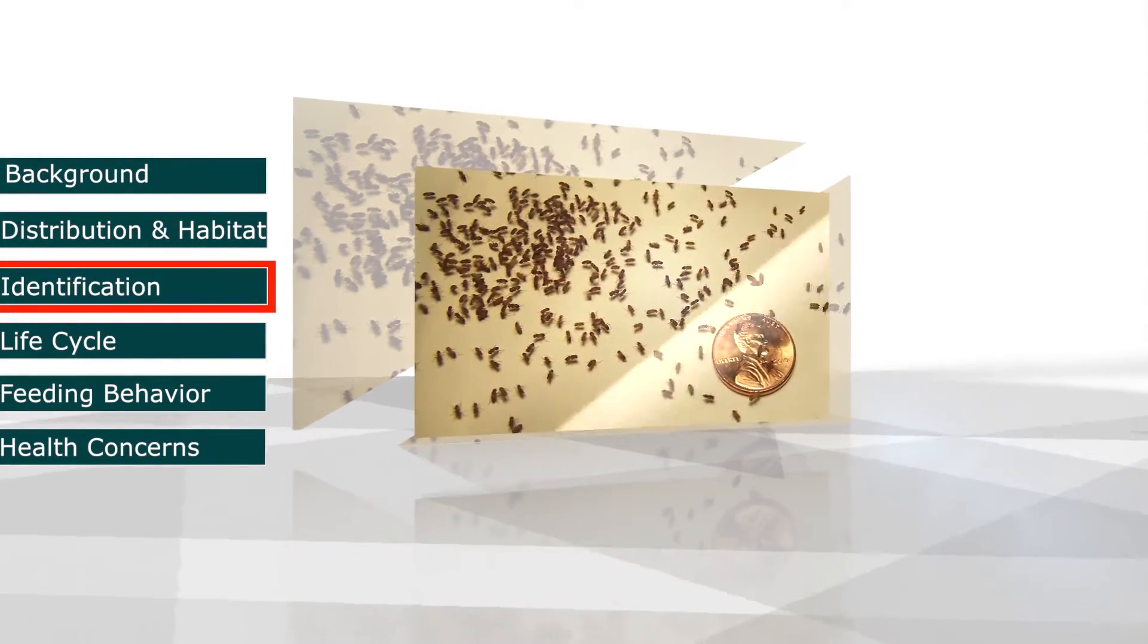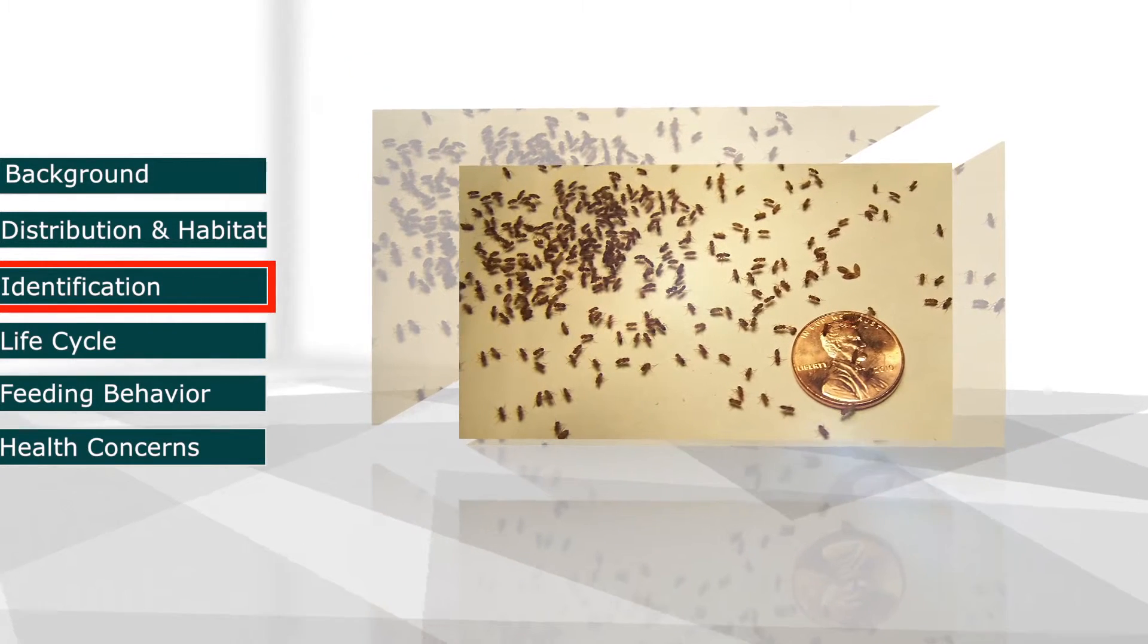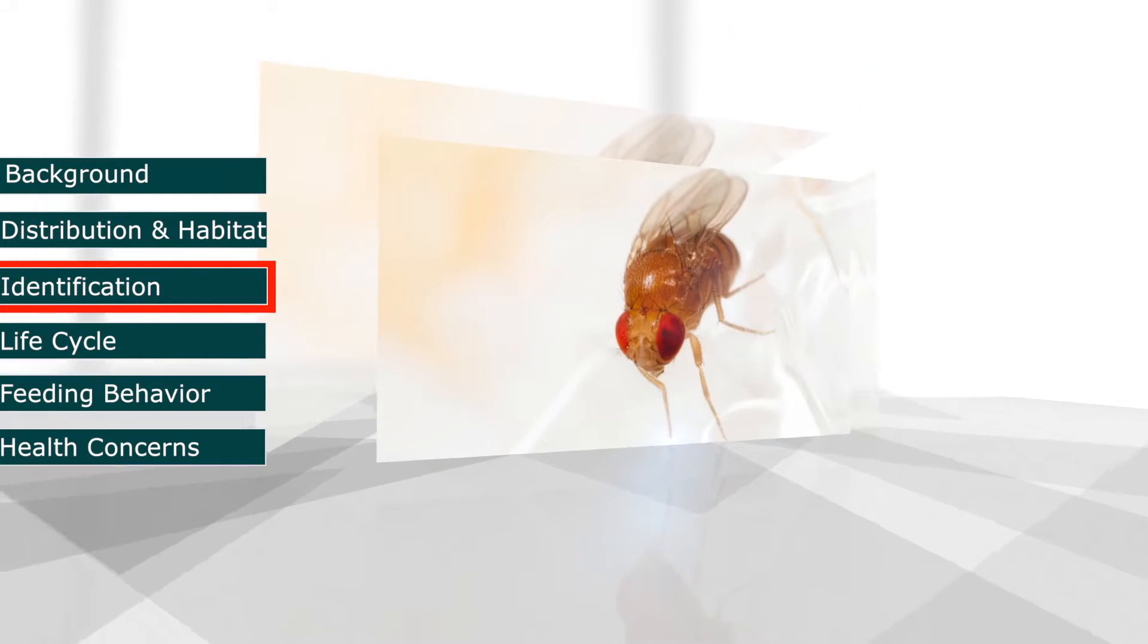Fruit flies are approximately one-eighth of an inch long with red eyes and have an orange, tan, or dark body.